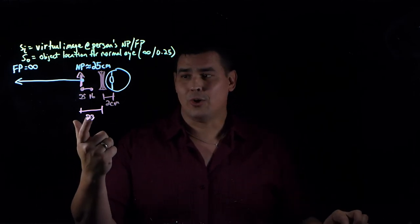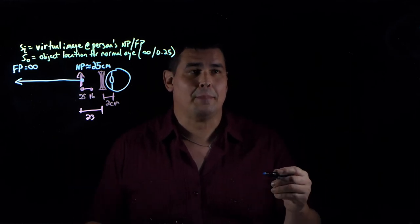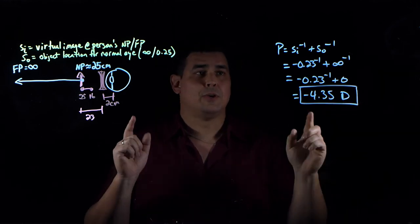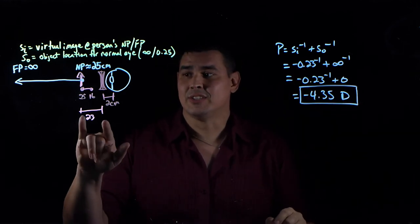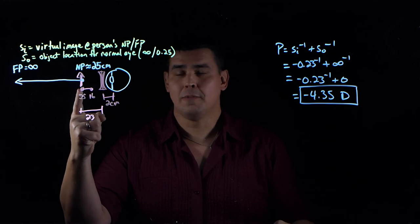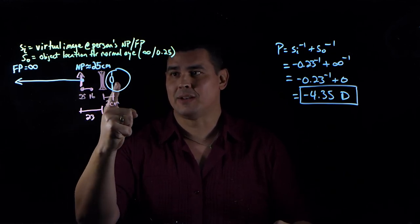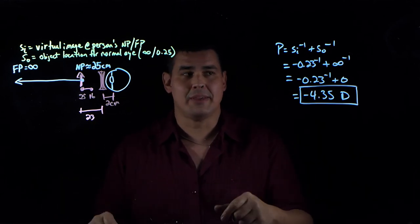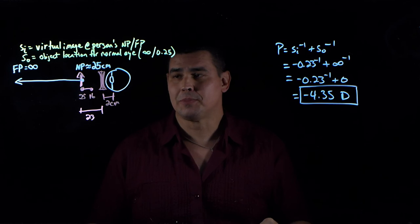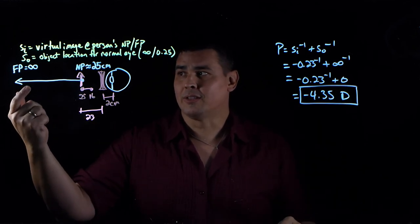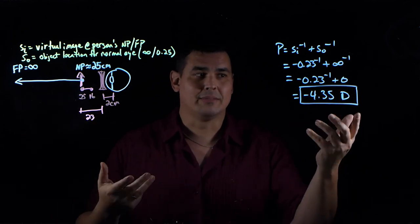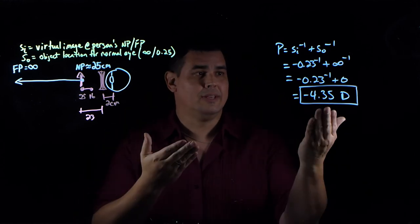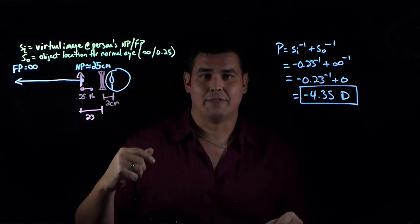Knowing the corrected distance, it's just like any other problem. The image distance is negative 0.23 meters — negative because it's a virtual image, 0.23 because meters are needed for diopters — and the object is at infinity. Solving gives negative 4.35 diopters. This makes sense because negative numbers mean diverging lenses, which is correct for a nearsighted person.